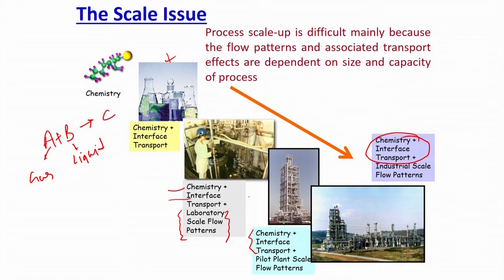We were discussing scale-up issues in multiphase flow. The major problem is the flow pattern, which changes from the laboratory scale to the pilot plant scale. We do not have sophisticated measurement tools available to accurately predict flow behavior at laboratory scale. In scale-up, your flow pattern depends on both the size of the system and the capacity, so changing either may change the flow pattern — that is the major problem in multiphase flow reactors.